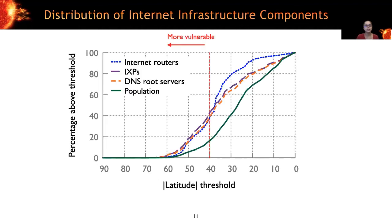And this pattern repeats across other infrastructure components as well. So in this plot, we look at the distribution of various other components. So on the x-axis, we have a latitude threshold. And on the y-axis, we have the concentration, the percentage of infrastructure components above that threshold. So the most vulnerable region is above the 40 degree threshold. Here, we see that only about 16% of the world's population is in the vulnerable region. But about 35 to 45% of the infrastructure components is in this region. And this holds true for other components as well, which you can see in the paper. So basically, internet infrastructure components are concentrated in more vulnerable regions.